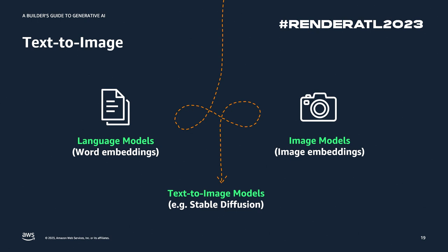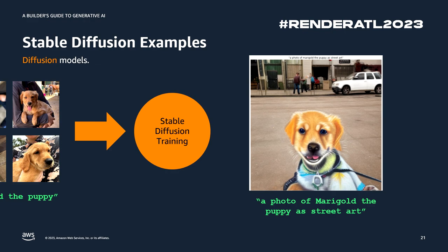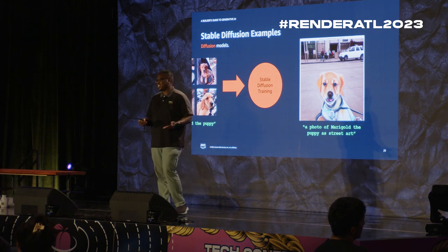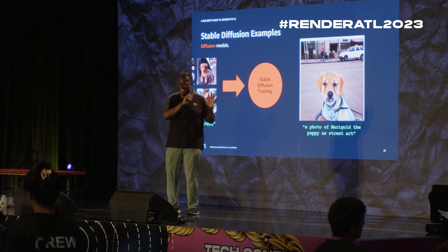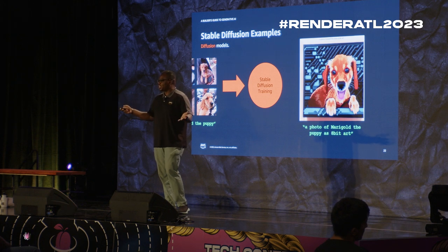When we think of text-to-image — a very popular one — we combine the language model and image models together so we can understand text and then map that to an embedding space of what images are. A popular model for this is Stable Diffusion. One great idea is being able to take your own images and feed them to a model. In this example we have Marigold the puppy. If you pass many images into a Stable Diffusion model, you can then type text like 'a photo of Marigold the puppy as street art' and it generates that image. You can also say 'Marigold in 8-bit art' and so on.